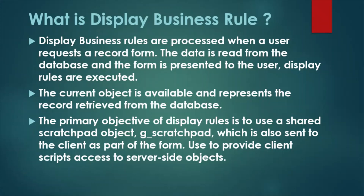We can use the current object whenever we need to retrieve data from the database — it is available in the display business rule. The primary objective of the display business rule is to use a shared scratchpad object, g_scratchpad, which is also sent to the client as part of the form. This is used to provide client script access to server-side objects. If the client side needs any server-side data which is not available on the form, we can use the display business rule to store that data into the g_scratchpad variable, and then use it on the client side.